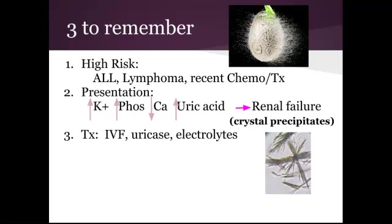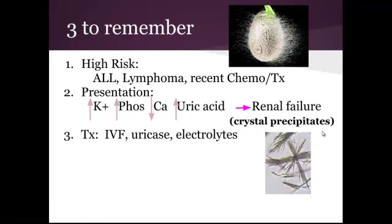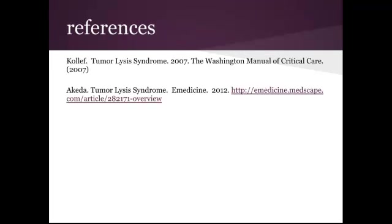To remember for tumor lysis syndrome: the high-risk patients to think about when they come into the ER are those with leukemia or lymphoma who have had recent chemo or some kind of cancer treatment. The presentation is high potassium, high phosphate, and low calcium — which binds up with phosphate — and high uric acid. These form crystal precipitates that cause renal failure. Treatment is IV fluids, using enzymes like uricase, and checking frequent electrolytes. Thanks for joining us on EM in 5.